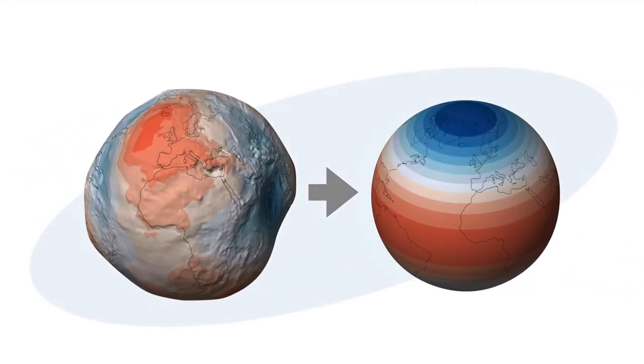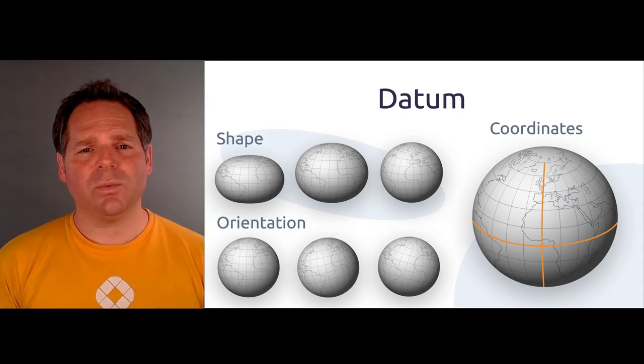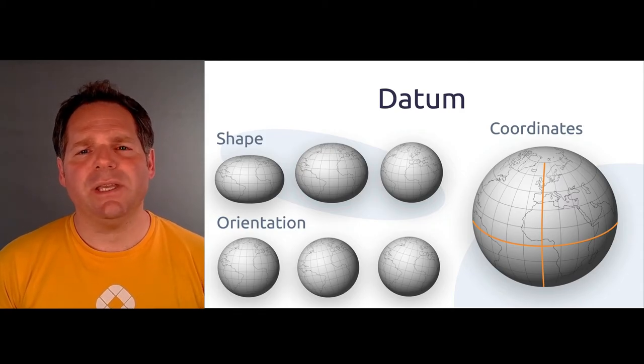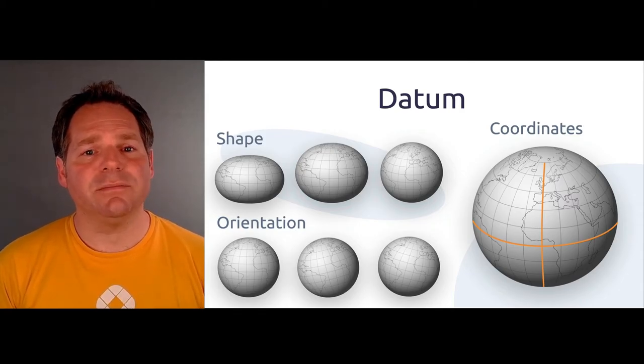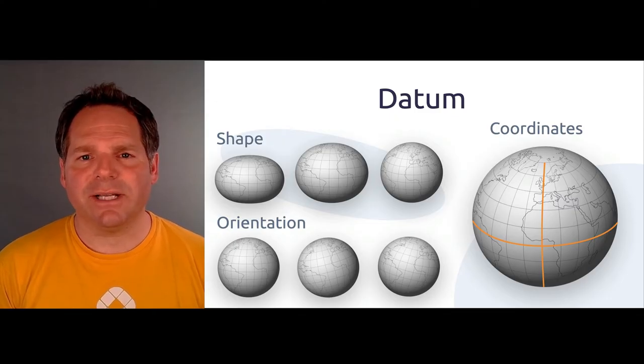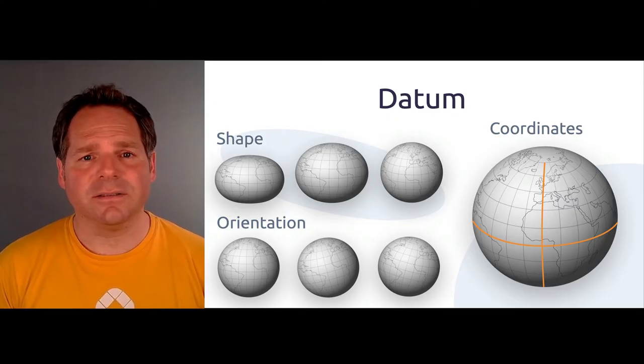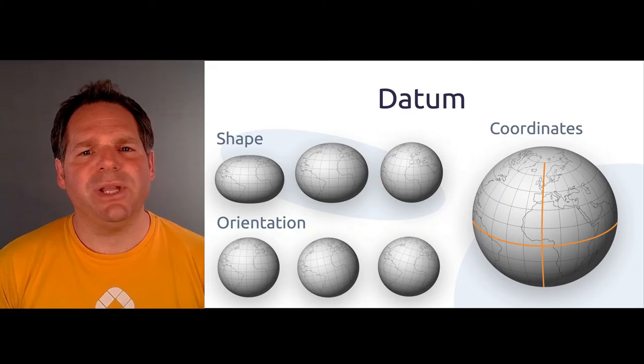Let's focus on the first problem: how to fit an ellipsoid to the geoid in the best way. There are several ways to do this, but there will always be places that don't fit perfectly. That's why we have a datum. Datums include information about the shape and size of the Earth, as well as its orientation in space — in other words, which ellipsoid is being used, and where the zero meridian, such as the Greenwich meridian, and the zero parallel, like the equator, are.